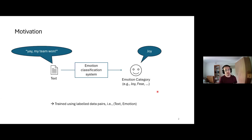How could we create such an automatic system that goes from text to a closely associated emotion? We can use a neural network and train it using labeled pairs of texts and emotion labels.